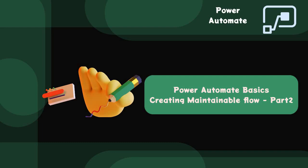Hello guys, welcome back to another session of Power Automate Basics. This is going to be the continuation of an earlier session where we discussed creating maintainable flows. In the previous session we covered how to use the renaming feature as well as the notes feature to provide more meaningful descriptions about the actions we are performing. Now this time we are going to discuss about grouping of the flow logic within Power Automate.